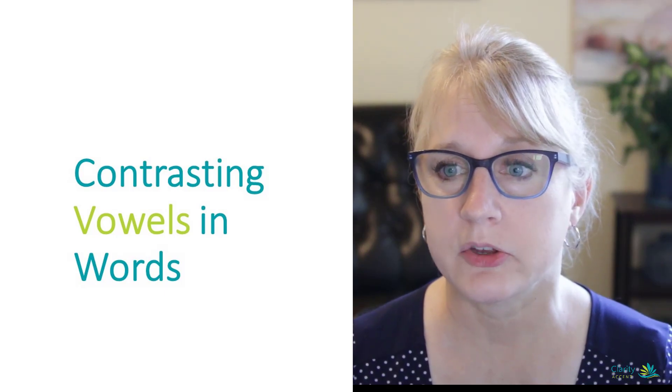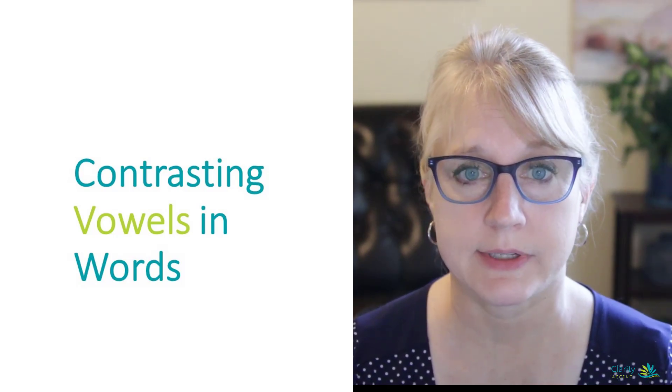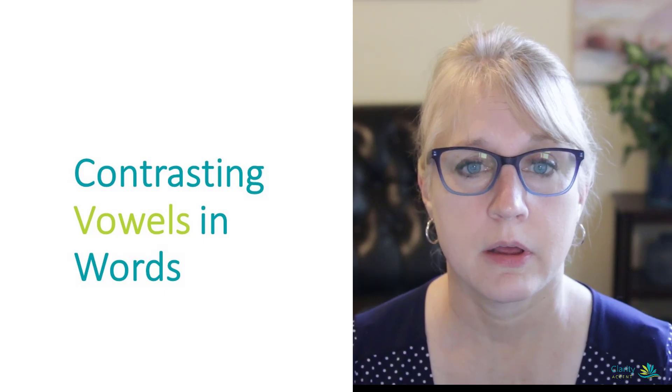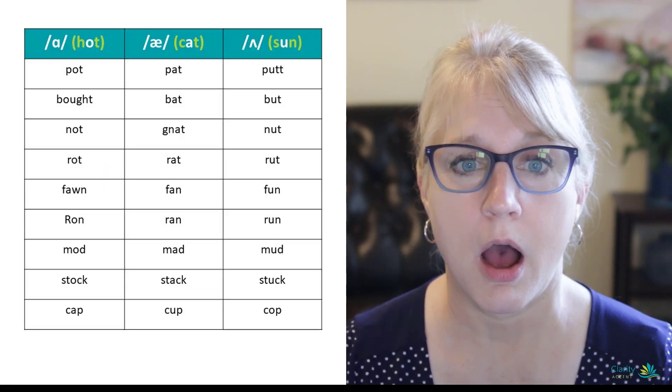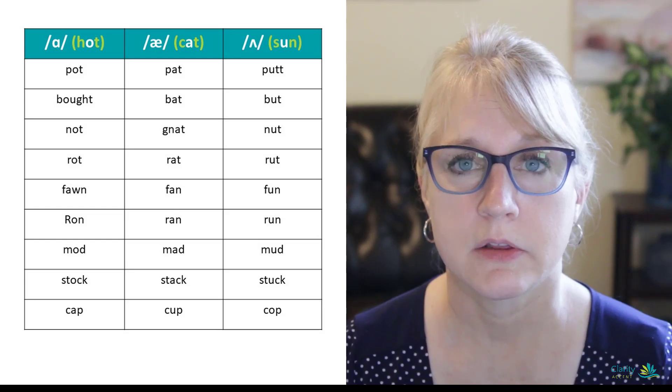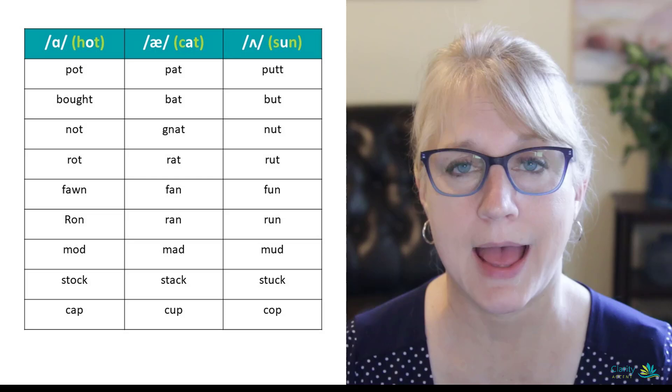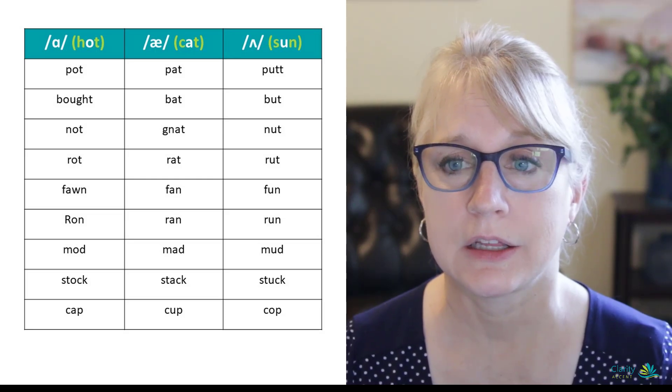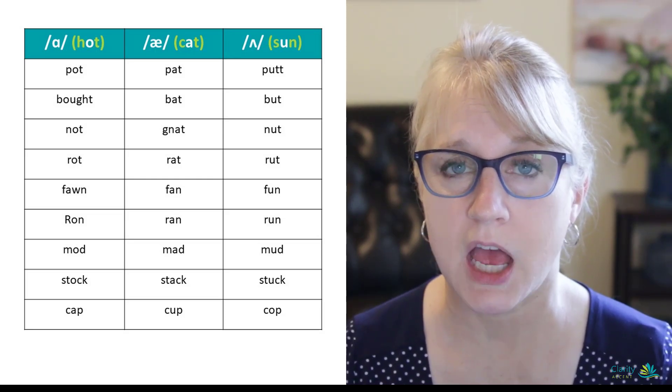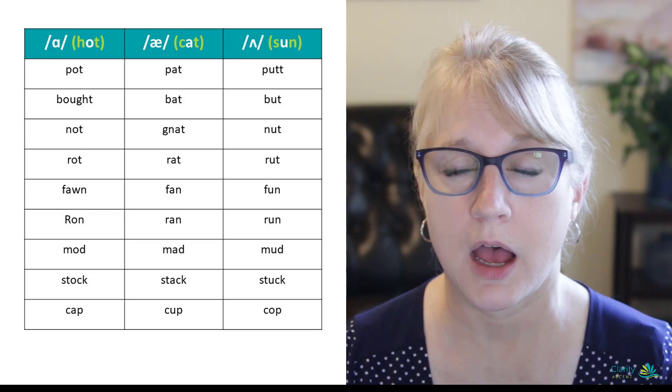So the vowel sounds we're going to contrast today are the short O like hot, the short A like cat, and the short U like sun.